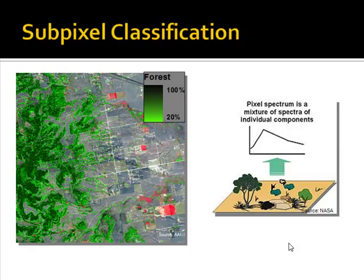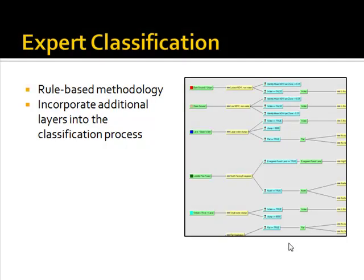Sub-pixel classification is a technique often used on moderate resolution sensors such as Landsat, which has a relatively coarse resolution of 30 meters. Within each 30-meter pixel there may be a number of materials, so sub-pixel classification techniques detect the relative proportion of a specific material within that pixel. Expert systems represent a rule-based methodology that can also incorporate additional layers into the classification process, merging traditional GIS vector data sets with remotely sensed data sets.